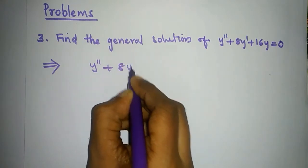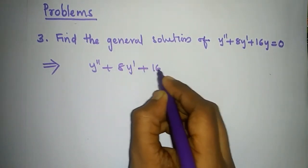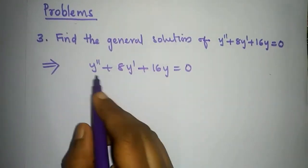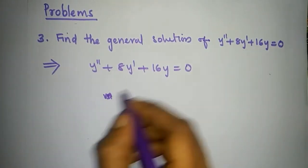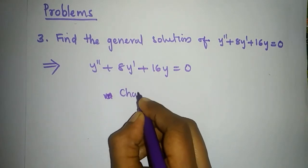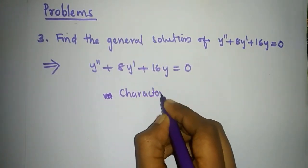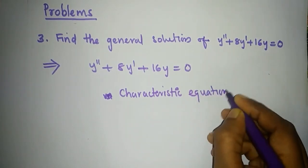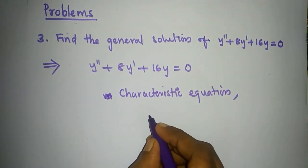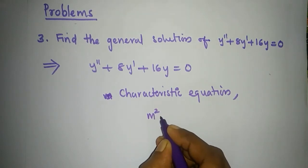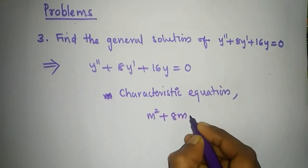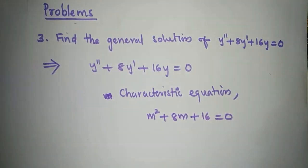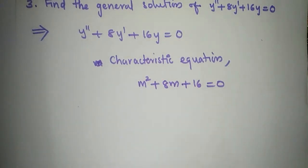Let's go to the differential equation. What is the characteristic equation? The characteristic equation is m squared plus 8m plus 16 equal to 0.